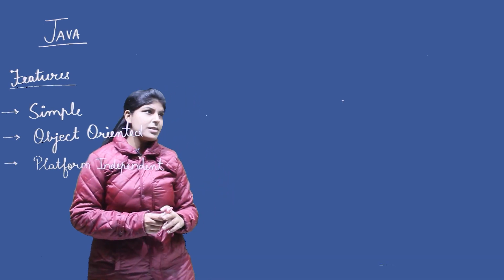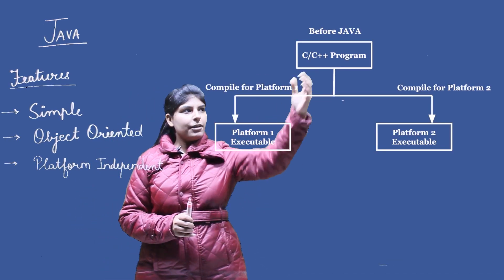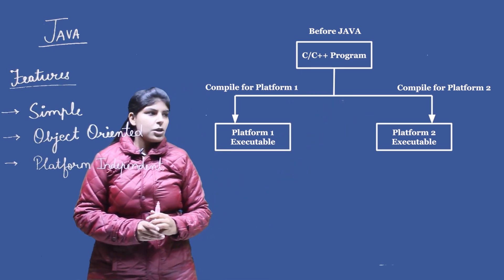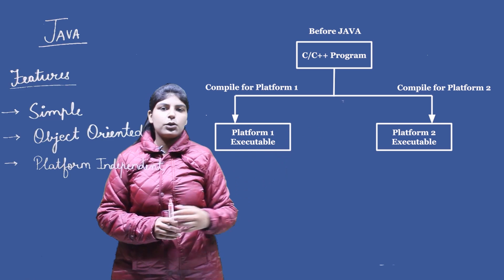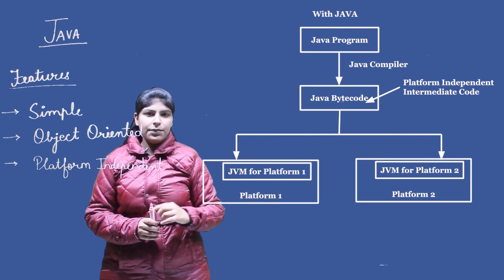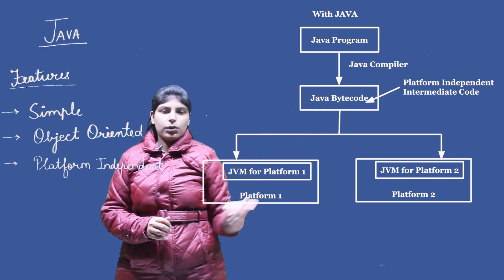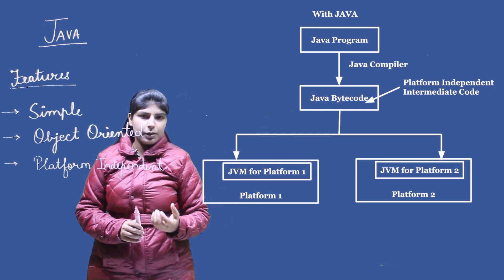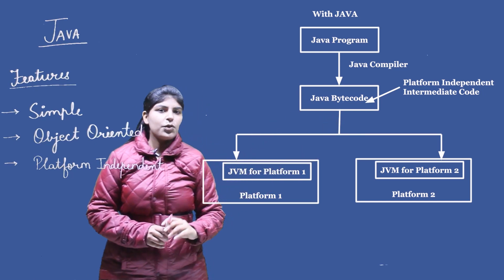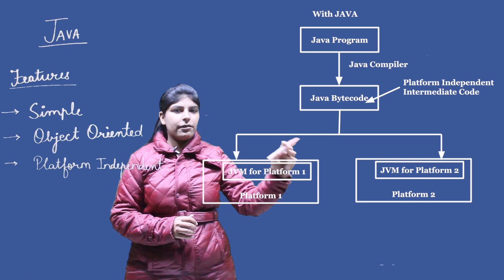Before Java, when we wrote C or C++ code and compiled it, it translated into machine language, and for different platforms we needed a different compiler. In Java, when we compile the Java code it produces bytecode. This bytecode is an intermediate representation and we can run it on different platforms — we just need the JVM installed on that platform.